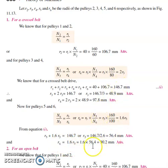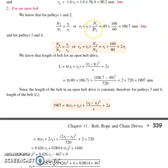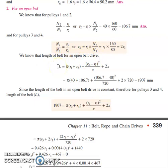For the open belt condition, we again use n2/n1 = r1/r2 for the first two pulleys and n4/n3 = r3/r4. However, the condition r1 + r2 = r3 + r4 = r5 + r6 only applies to the crossed belt drive. For the open belt, we instead use the formula for the length of an open belt drive and substitute all known data.